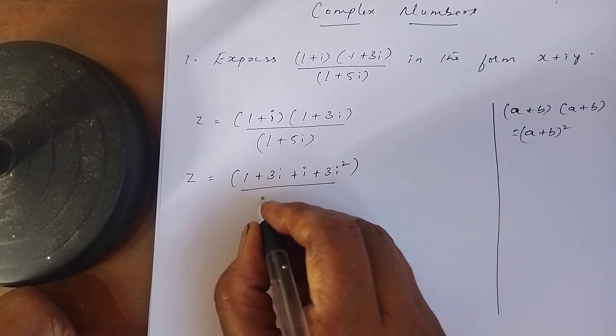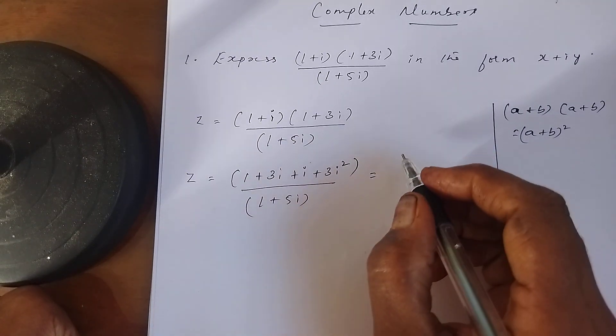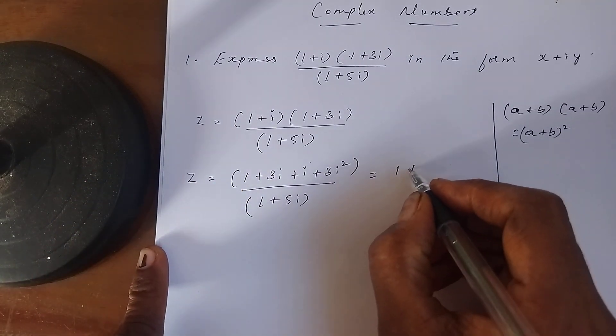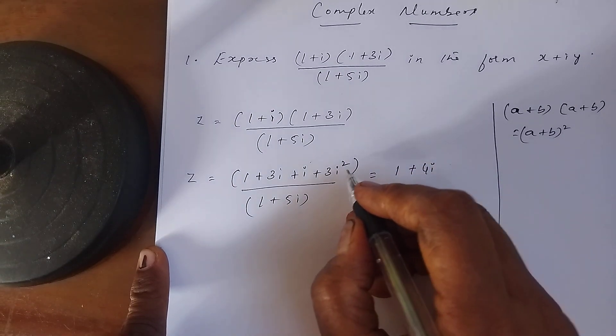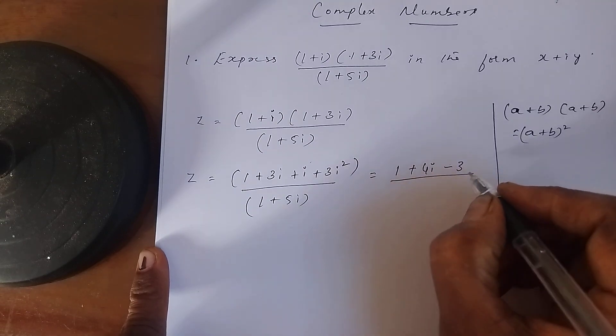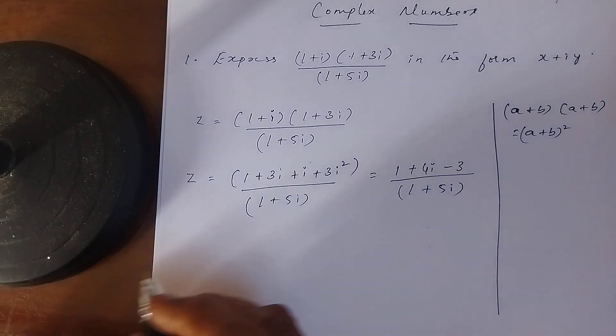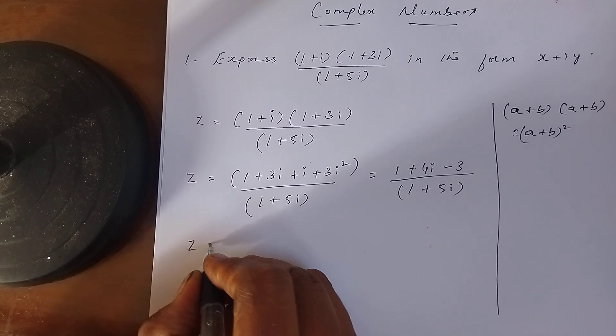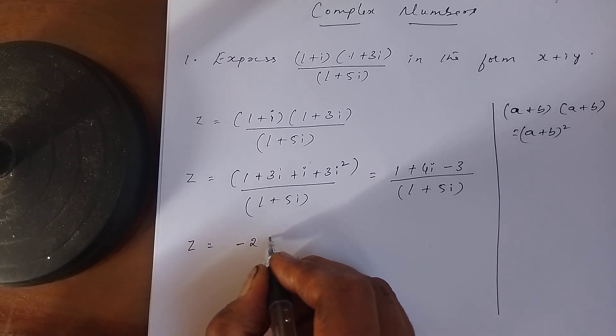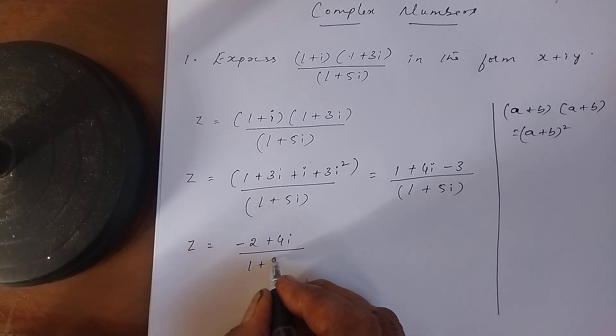Divided by 1+5i. What we will get here? So 1+4i, i² means -1, so -3 divided by 1+5i. Z equals 1-3 is -2+4i whole divided by 1+5i.